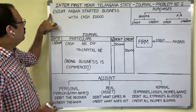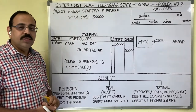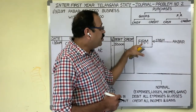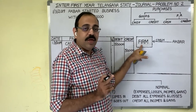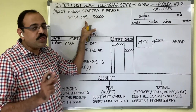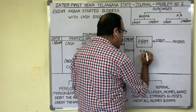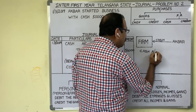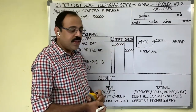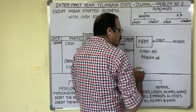The first transaction is on 1st March 2019. Akbar started business with cash 50,000 rupees. Here Akbar is the owner of the business; he started business by bringing 50,000 rupees cash. While writing journal entries, the first step is that every financial business transaction contains minimum 2 accounts, and these 2 accounts we should identify first. Here, cash is coming to the firm, so cash account is one account. Cash is coming from Akbar, so another account is Akbar account. First step is completed.